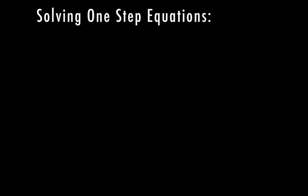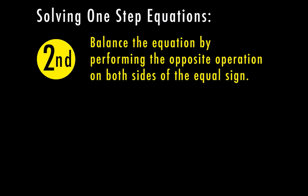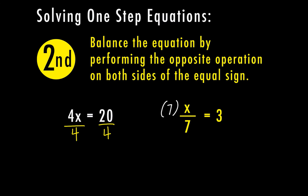Now that we've identified what's happening on the same side of the equal sign with the variable, we want to next balance the equation by performing the opposite operation on both sides of the equal sign. For example 1, we have 4 times x equals 20 — the opposite of multiplying by 4 is dividing by 4, and whatever I do to one side, I have to do to the other side. For example 2, I have x divided by 7 — the opposite of dividing by 7 is multiplying times 7, and whatever I do to one side, I have to do to the other side.